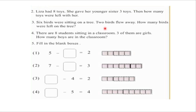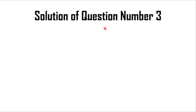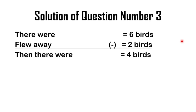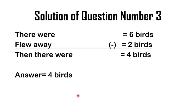So how can we summarize this question? Let's go to the board. In the first line write: there were 6 birds, flew away 2 birds — this data is mentioned in the question. In the final line write: then there were 4 birds. Can you guess why 4? Whenever you count 6 minus 2 it is equal to 4. So the answer of this question is: Answer equals 4 birds.